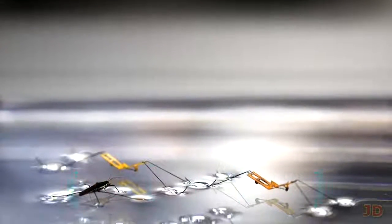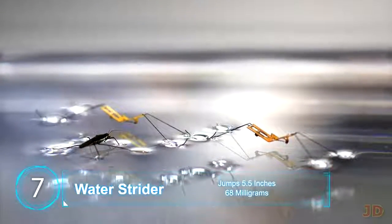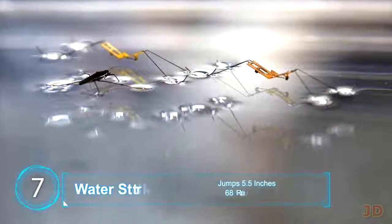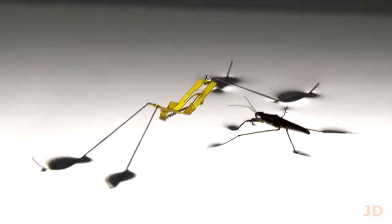At number 7, the Water Strider Bot. Many robotic versions have been developed around insects which can walk on water. But just recently, Seoul University has built a strider which can jump 6 inches off the surface of water and stay afloat. It weighs only 68mg and maximizes surface tension to mimic its real-life counterpart.